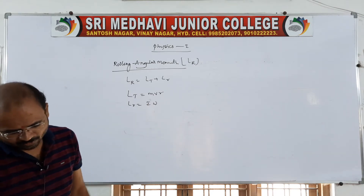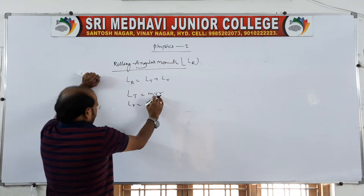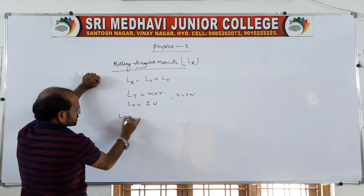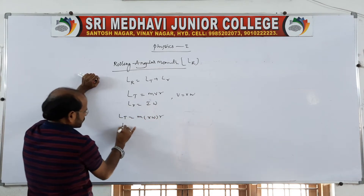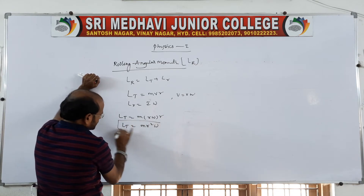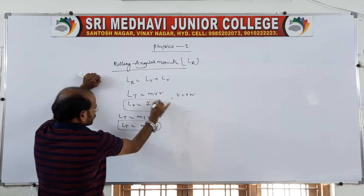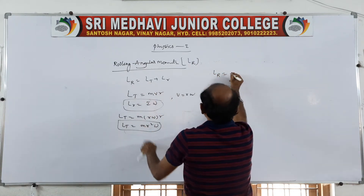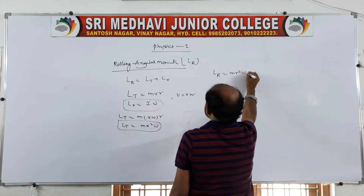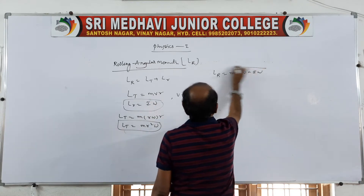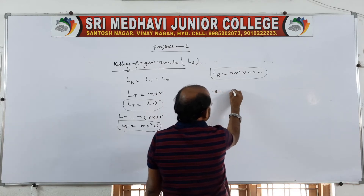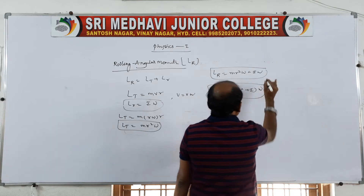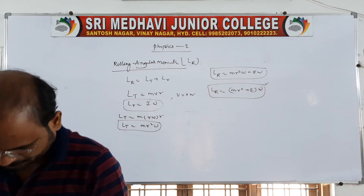Replacing v with r omega: L_translation equals m into r omega into r, which is mr squared omega. Therefore L_rolling equals mr squared omega plus I omega. So L_R equals (mr² + I) omega. This is the rolling angular momentum.